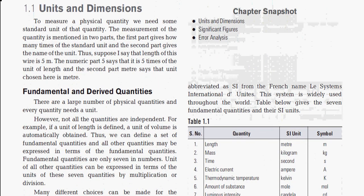Let's see another example: 5 kg. Here 5 is the value — it says it's 5 times the unit mass — and kg indicates that the unit chosen is kilogram.